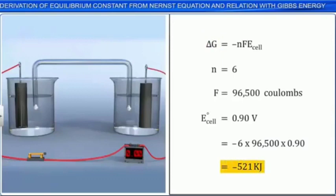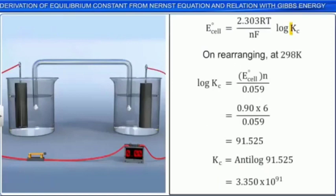You can find Kc from E cell. Start with the equation relating E cell and Kc. Rearrange to find log of Kc and substitute. Log of Kc is equal to 91.525. So, we end up with a Kc value of 3.350 into 10 to the power 91.